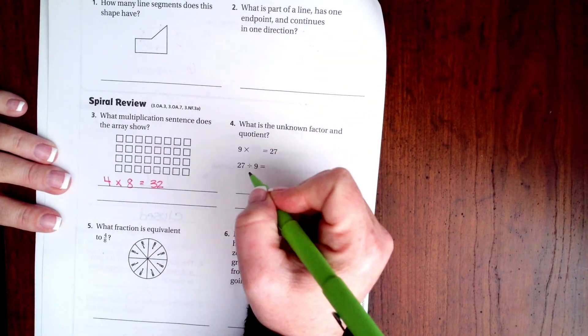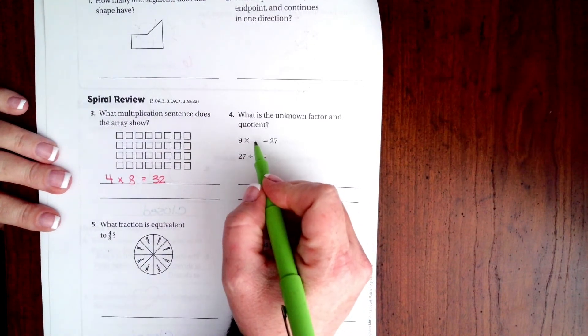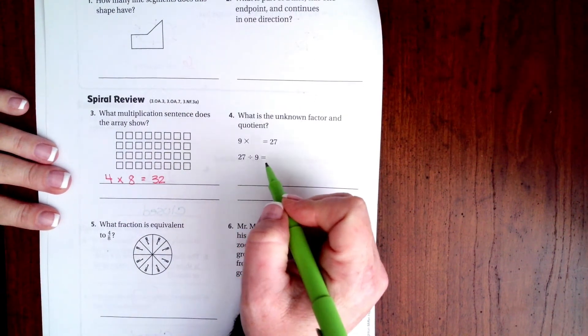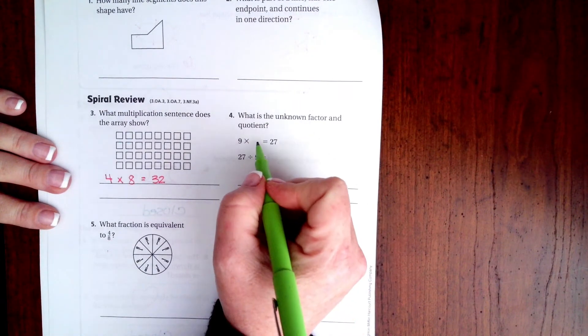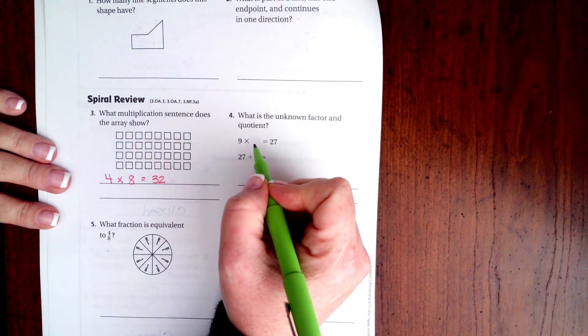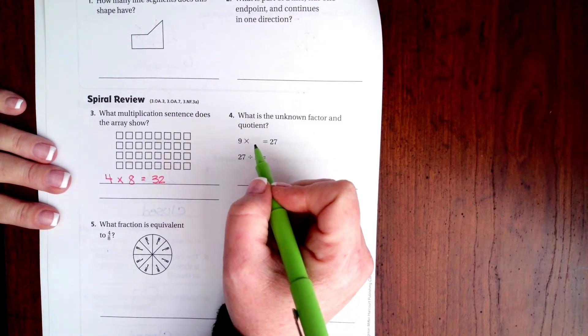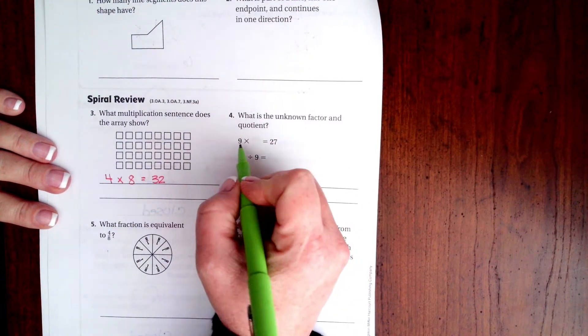What is the unknown factor and quotient? So factor here, quotient here. Quotient is the answer to a division problem, and a factor is just one of the numbers in a multiplication sentence that's not the answer. So nine times what is 27, or 27 divided by nine? Well, that's just three.